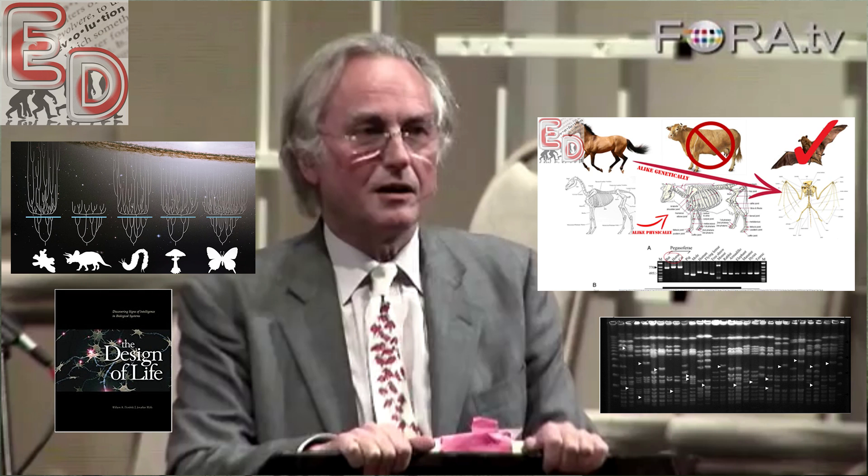Genetic similarities between organisms are actually not a problem for creationists at all. A common designer explains the evidence even better than a common ancestor once the many exceptions to the evolutionary tree are properly understood. In fact, evolutionists have a hard time even explaining how the genetic code could have arisen to begin with. Is this really the best evidence to refute creation?